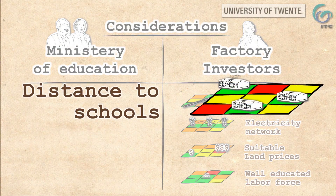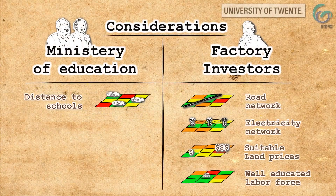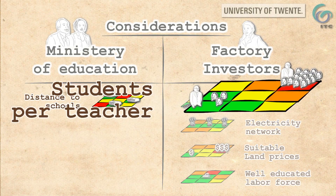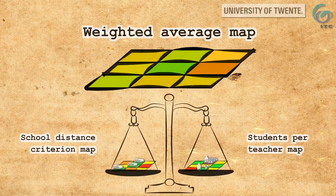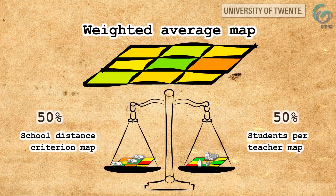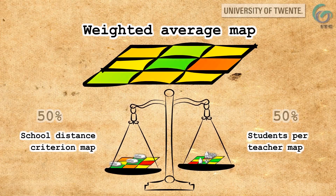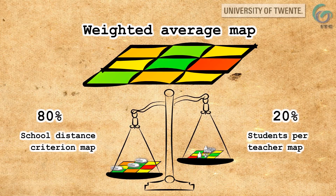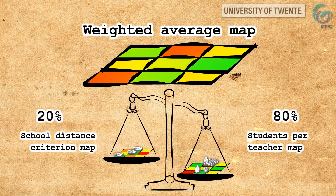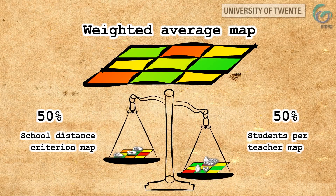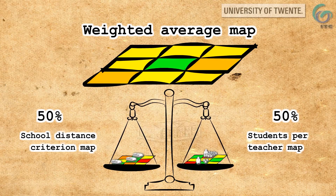You map suitable distance from current schools to build new schools, and you map suitable student-to-teacher ratios to invest in more teachers. Then with each decision maker, you establish their priorities. If good school access is more important, the final map will be more like the school distance criterion map. But if quality education is more important, the final map will be more similar to the students-per-teacher map. If both criteria are equally important, we find a most suitable location for the investment in the middle of this map.